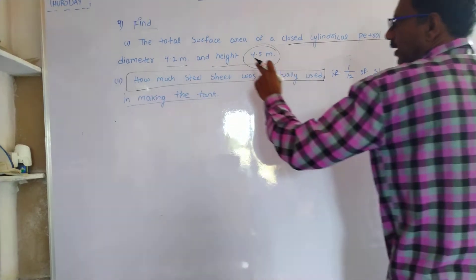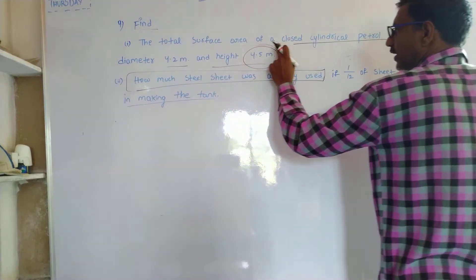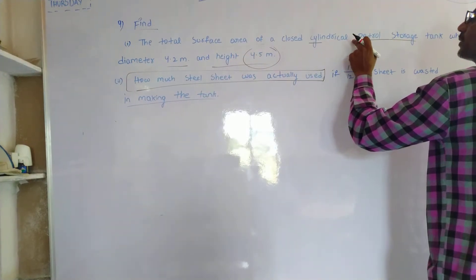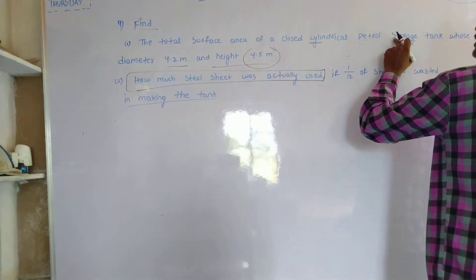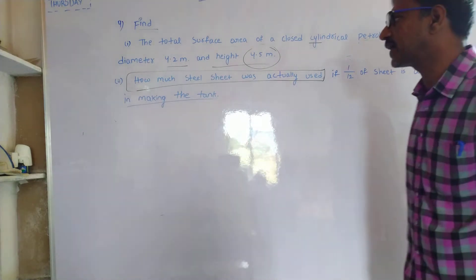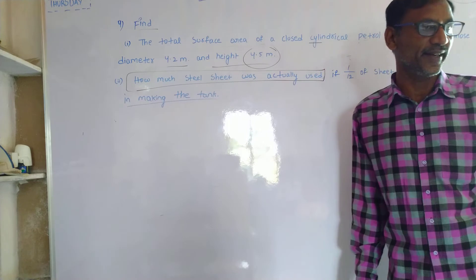Find the total surface area of a cylindrical petrol storage tank whose diameter is 4.2 meters and height is 4.5 meters.